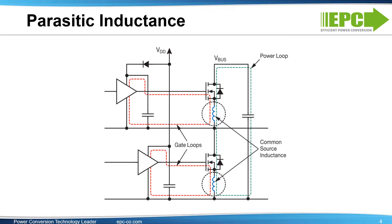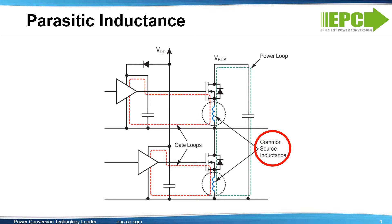Using a half-bridge configuration, let's look at the sources of inductance. There are three major loops to consider: the high frequency power loop formed by the two power switch devices along with the high frequency bus capacitor, the gate loop formed by the gate driver, power device, and high frequency gate drive capacitor, and the common source inductance, which is defined by the part of the loop inductance that's in common to both the gate loop and the power loop.